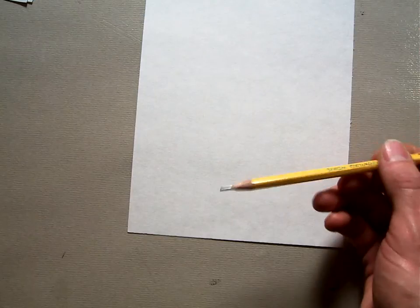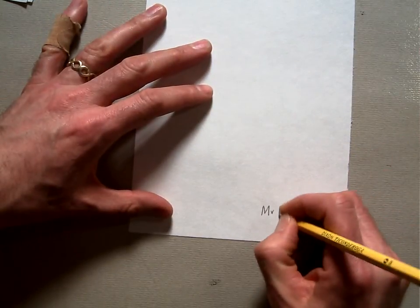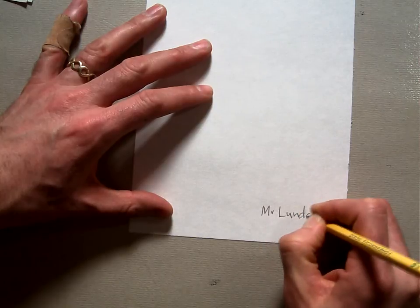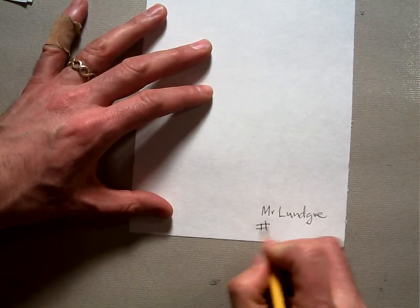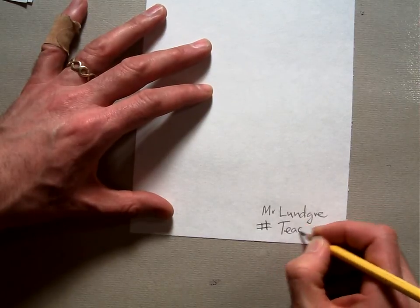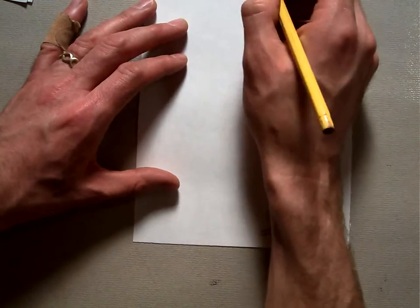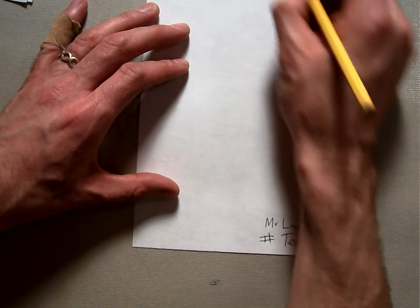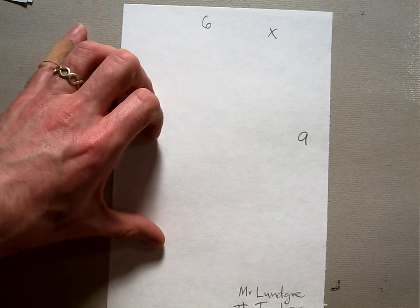You're going to start with a pencil and you're going to write your name. My name is Mr. Lundgren. I'm going to write that and then I'm going to write my grade number and your homeroom teacher. And for whoever is teaching this, this is a six by nine piece of paper.